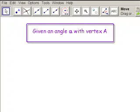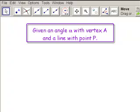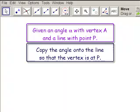In this math test, we're given an angle alpha with a vertex A and a line with a point P. And we're to copy the angle alpha onto the line so that the vertex is P.